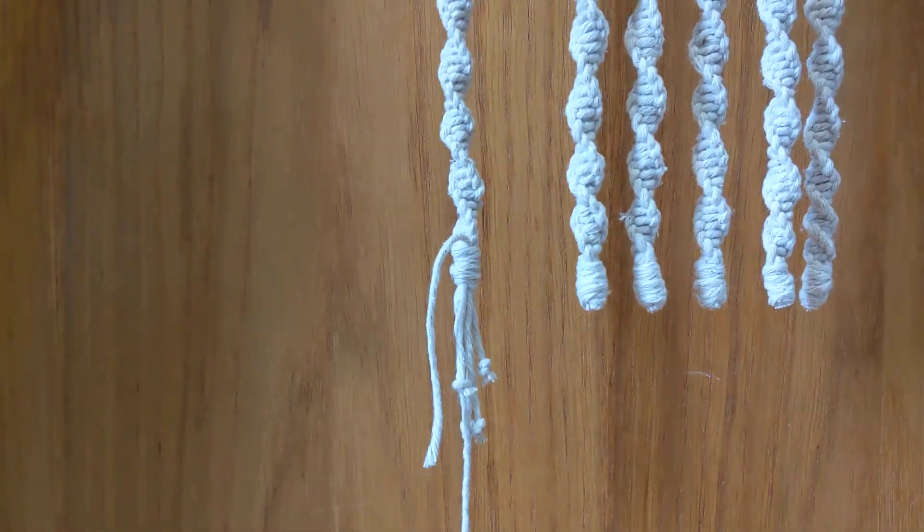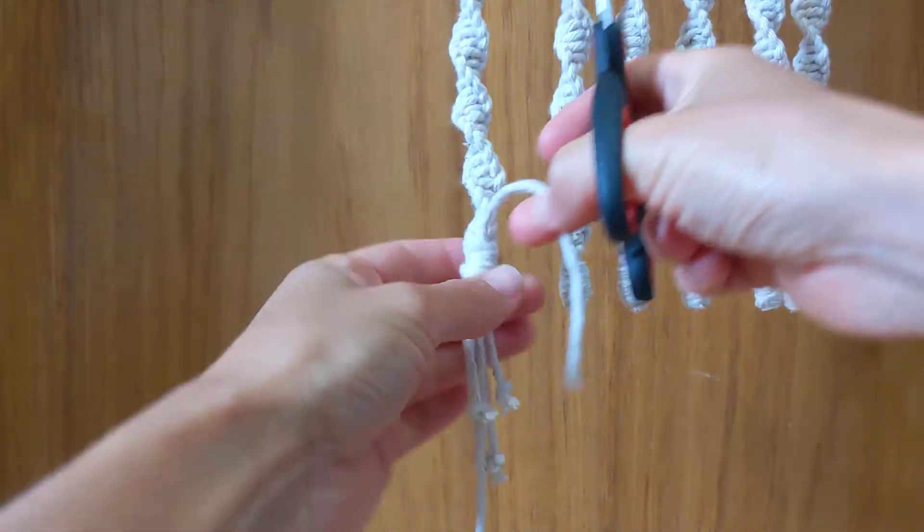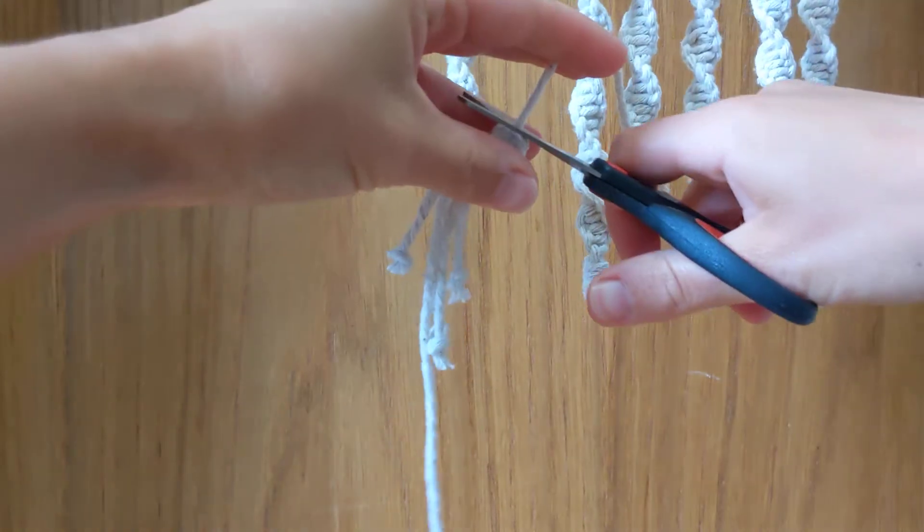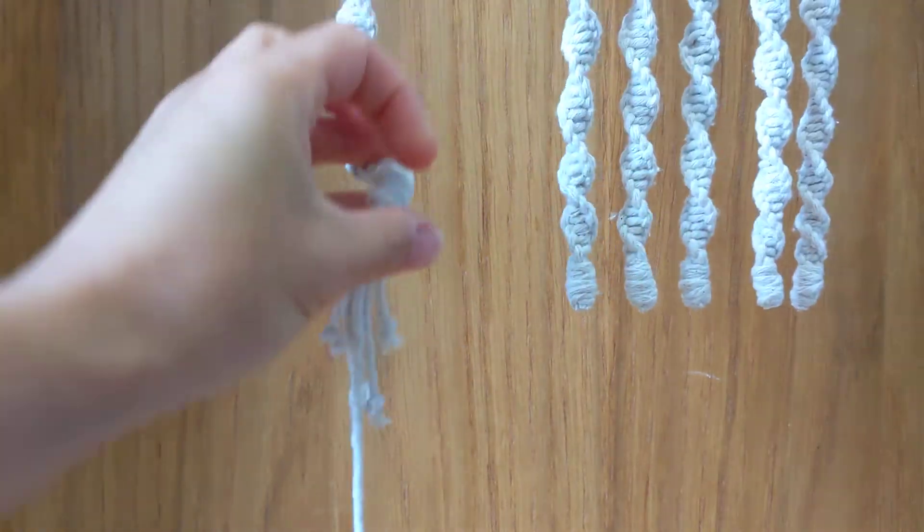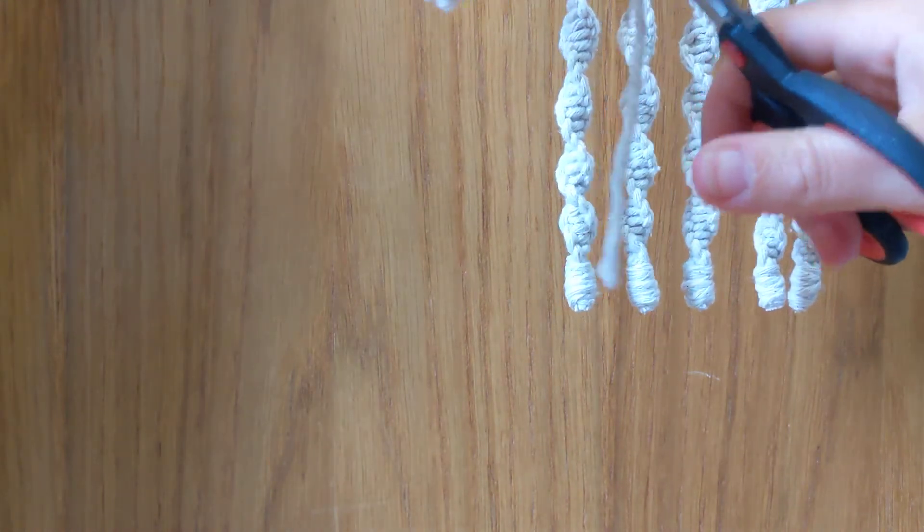Now you could tie a square knot underneath if you wanted to add a bit more security on there, however you can just cut the cords. So I'm just going to cut that as closely as I can and cut all these bottom cords as well.